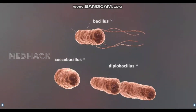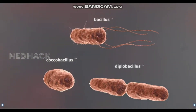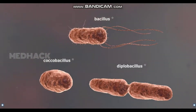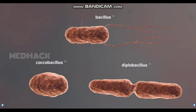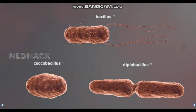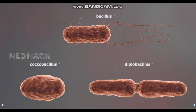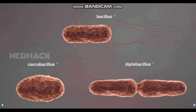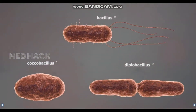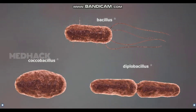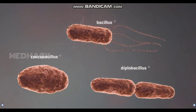Rod-shaped bacteria are called bacilli. Some of these are harmless, such as lactobacilli, used in the food industry. Many bacilli, however, cause diseases — for example, the pathogens of plague, tuberculosis, salmonellosis, and tetanus.